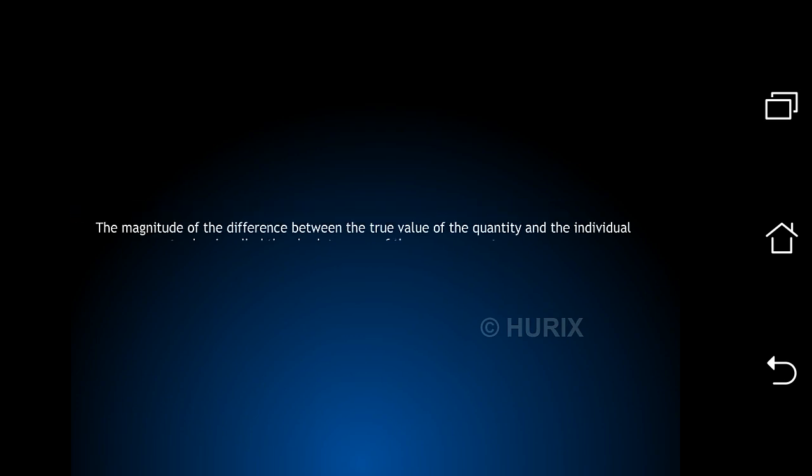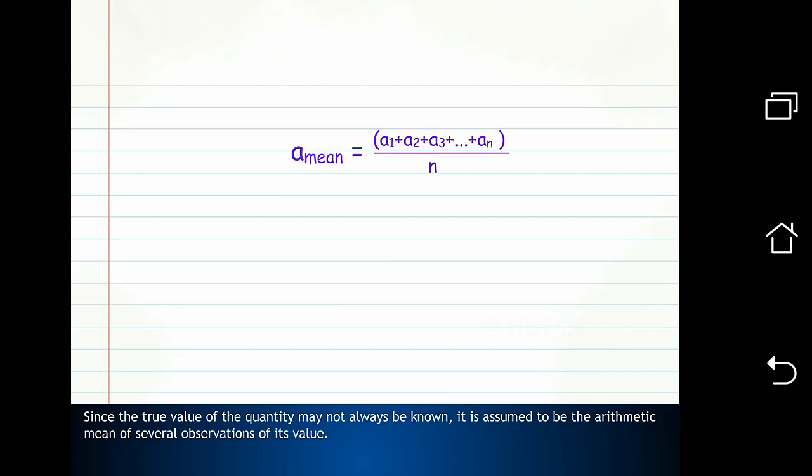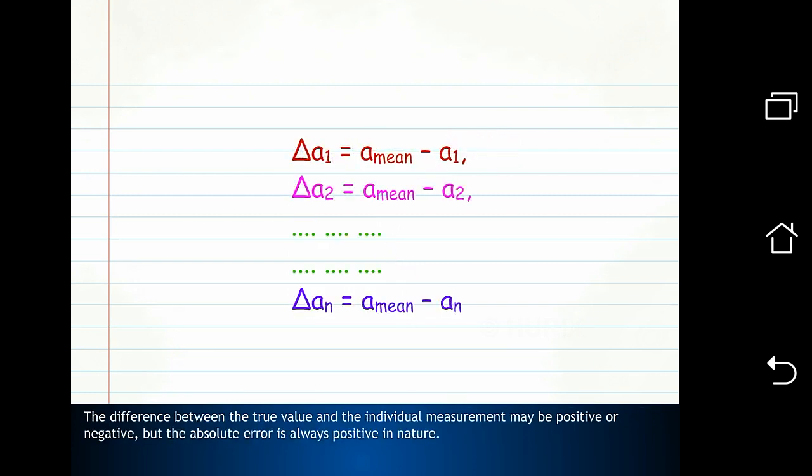Absolute error, relative error and percentage error. The magnitude of the difference between the true value of the quantity and the individual measurement value is called the absolute error of the measurement. Since the true value of the quantity may not always be known, it is assumed to be the arithmetic mean of several observations of its value. The difference between the true value and the individual measurement may be positive or negative, but the absolute error is always positive in nature.